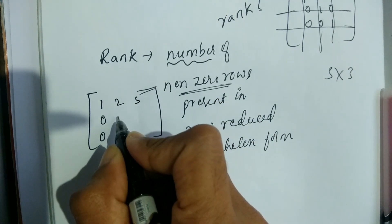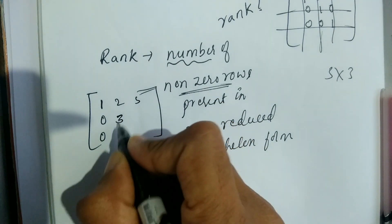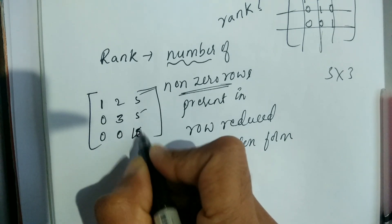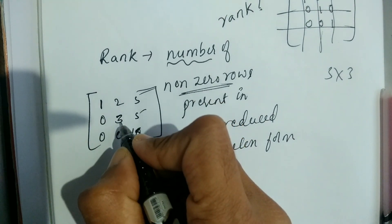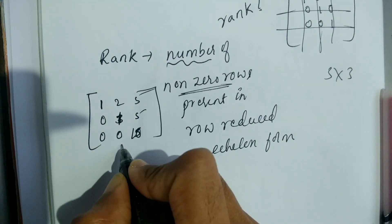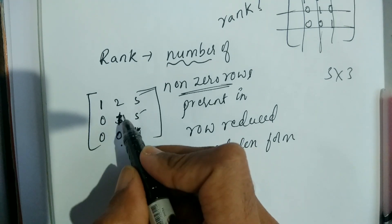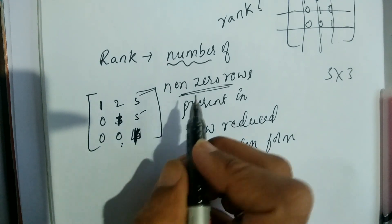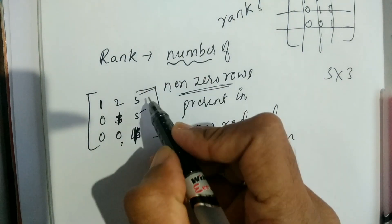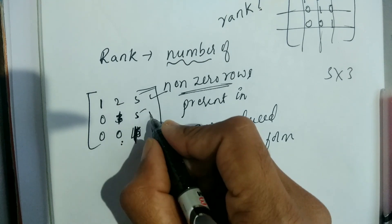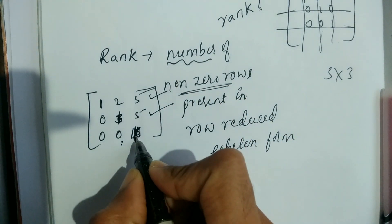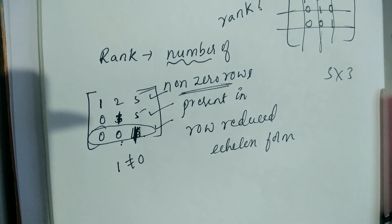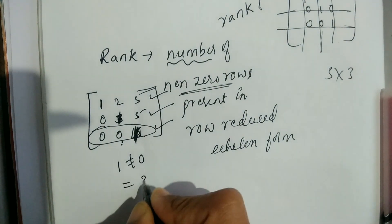In row reduced echelon form, we count the number of non-zero rows. For this unit matrix, all 3 rows are non-zero. Therefore, the rank is 3.